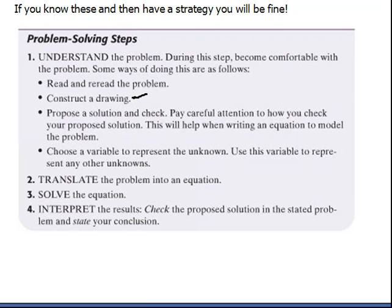The last one says choose a variable to represent the unknown. Use this variable to represent any other unknowns. This is absolutely crucial. In every single word problem that you do, you have to identify what your variable is. You have to literally write out X is whatever, number of trees in a lot, or dollars, or whatever it is that you're calling it. You have to be able to keep this information together.